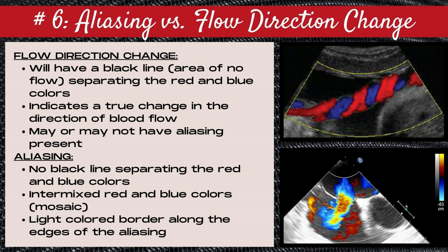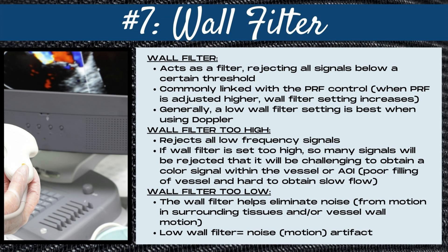With aliasing, as seen in the bottom image, there is no black line separating the red and blue colors. Rather, the red and blue colors and many of the colors on the color Doppler map spectrum are all intermixed — a mosaic of colors. There's also going to be a light-colored border along the edges of the aliasing.